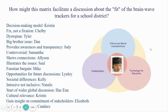Regarding how this matrix might facilitate a discussion about the fit of brainwave trackers for a school district — people provided many different ideas. This could be part of a decision-making model, how it could be a fix rather than a fixation, that it might highlight the dystopian use of brainwave trackers, that it could be a big brother issue, and that it may provide awareness and transparency.